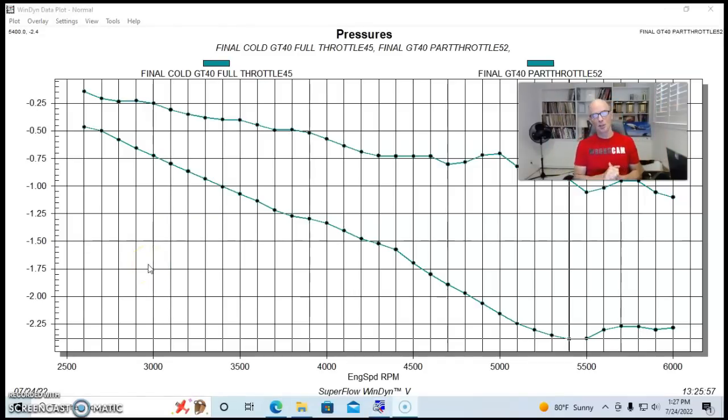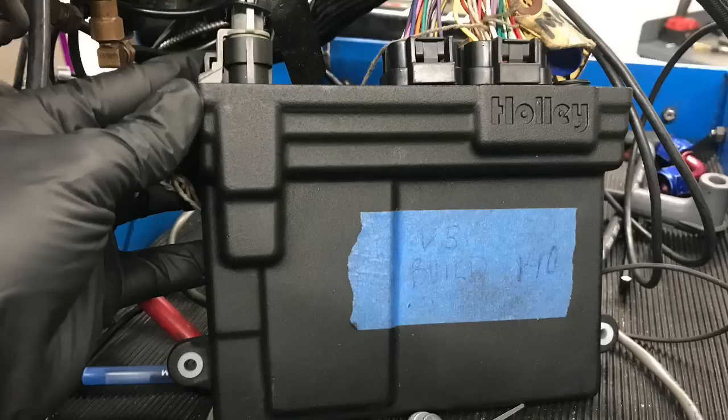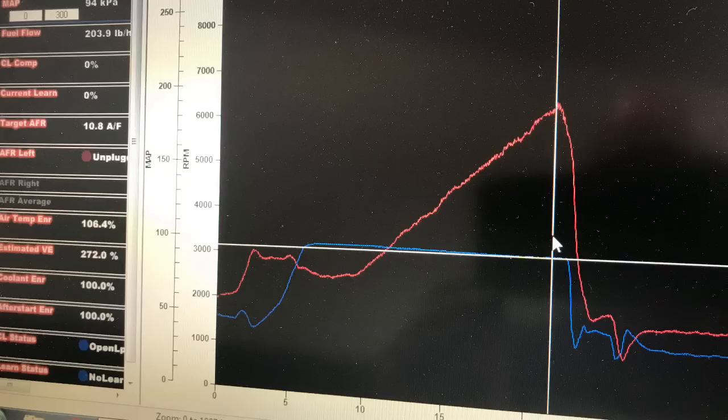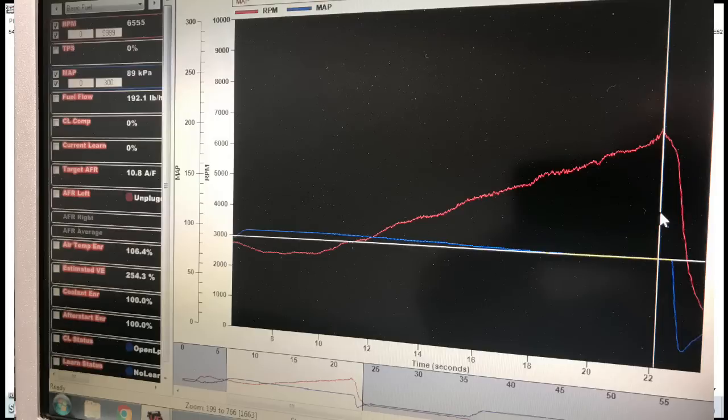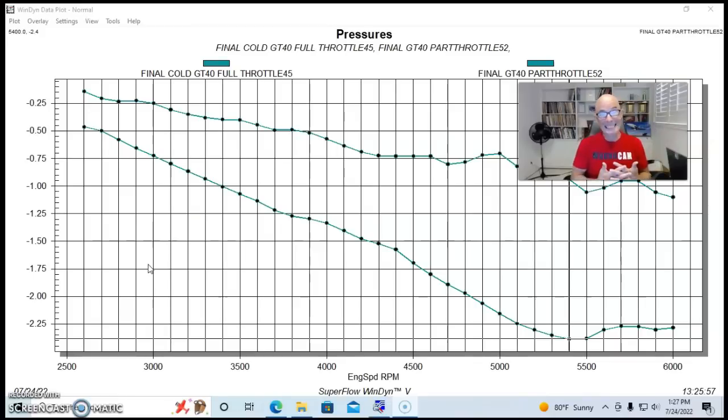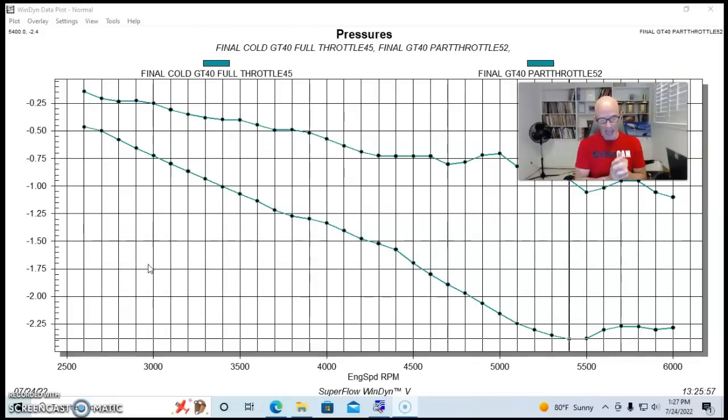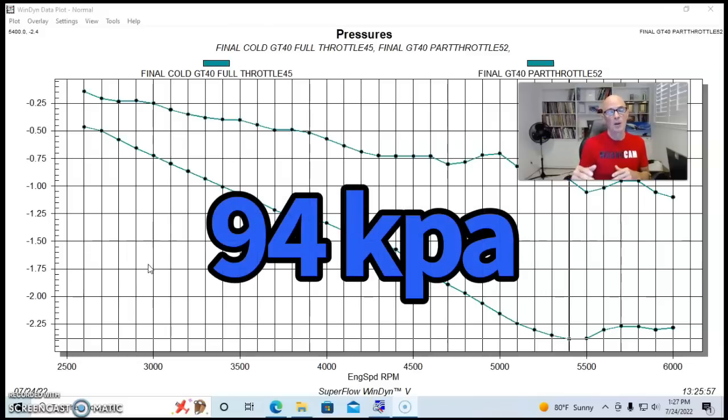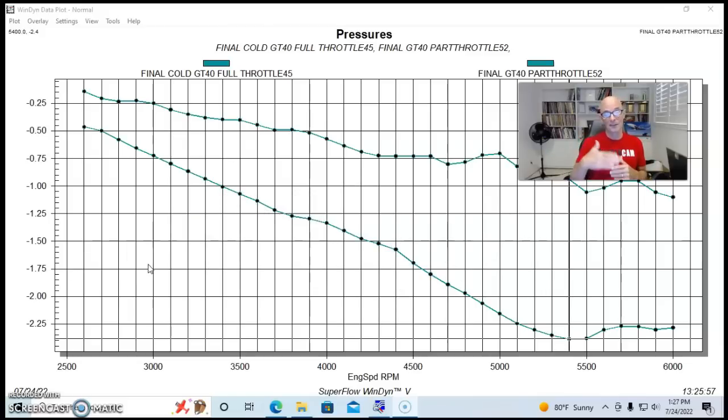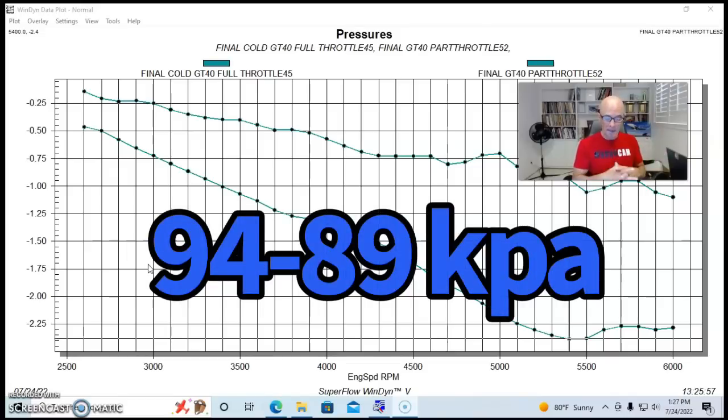Before we get to our conclusion, I wanted to correlate this with the vacuum readings that we were getting because we were running this with the Holley HP management system. So we had a map sensor. Run with full throttle, we started off, according to the Holley, at 96 KPA registered on the ECU, and it dropped down to 94 KPA. When we were running this thing at 50 percent throttle, the run started out at 94 KPA and dropped all the way down to 89 KPA.